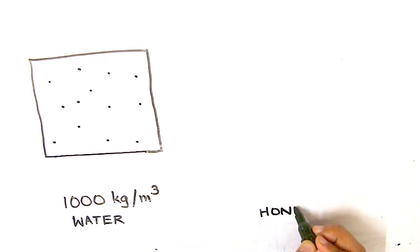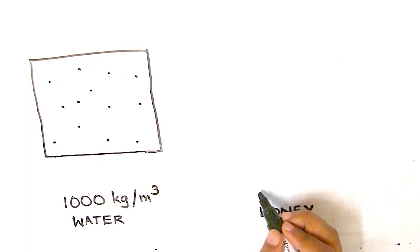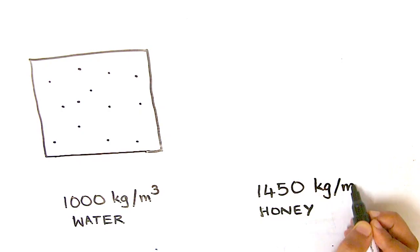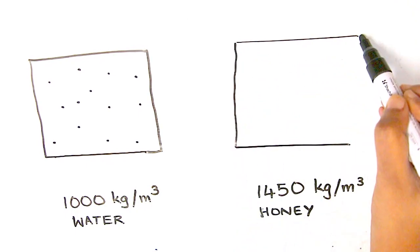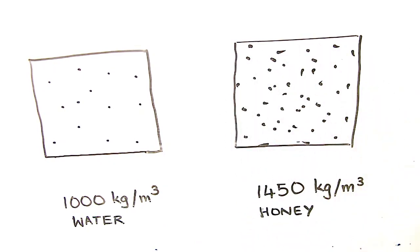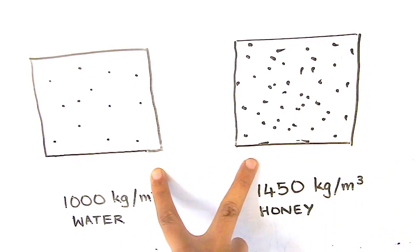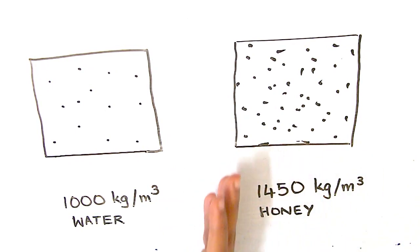For example, honey has a density that varies slightly depending on where the honey comes from. But roughly, the value is 1450 kilograms per meter cube. So if we fill 1 meter cube with honey, the weight of that honey is 1450 kilograms — heavier than water.